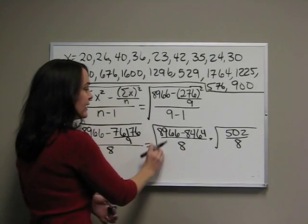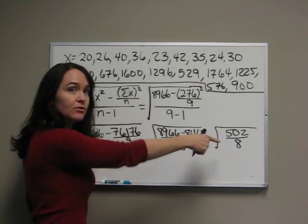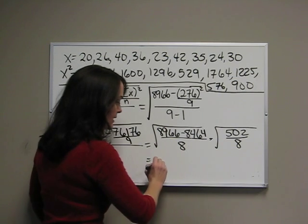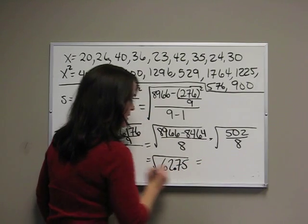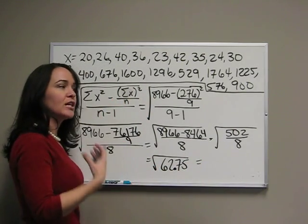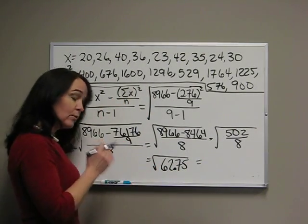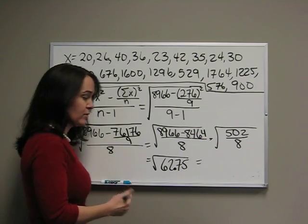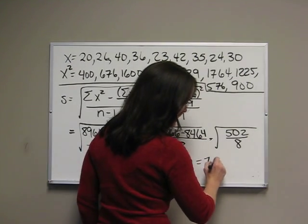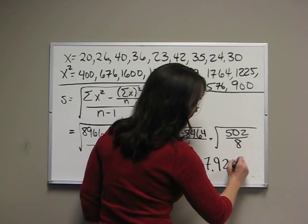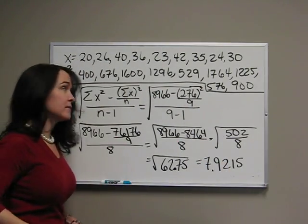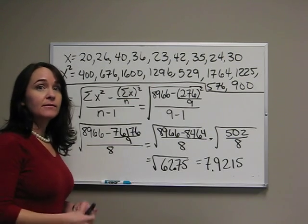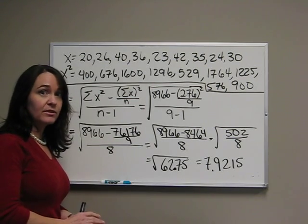Now, we're ready to divide. 502 divided by 8 is 62.75. Now, we're finally ready to get rid of that square root. You've got to take the square root of that final number. That is 7.9215. Remember to put all your numbers to four decimal places. This concludes the sample standard deviation.